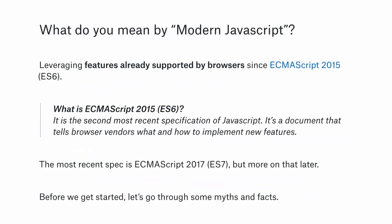What do I mean by modern JavaScript? I'm focusing on features supported by browsers since the ECMAScript 2015 spec. This was published in June by a committee called TC39, which defines the standard for JavaScript. It tells browser vendors what features to include and how functions should behave. There have been quite a number of features available in modern browsers, at least in the latest two versions, and I want to focus on those.